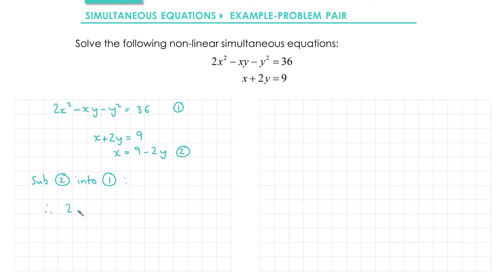So we get 2x² becomes 2 times (9 - 2y)². When you substitute things in, make sure you always use brackets. Minus xy, so minus (9 - 2y) times y. And then we have the minus y² equals 36.